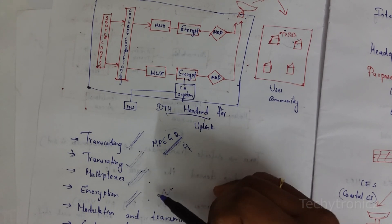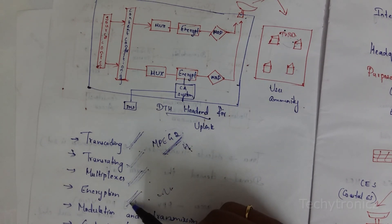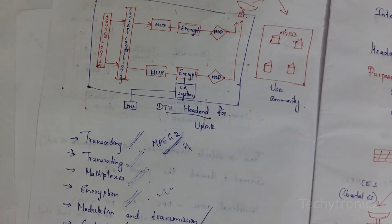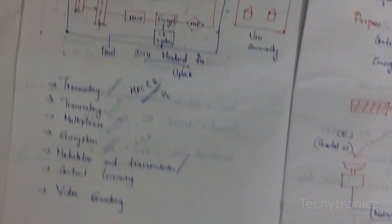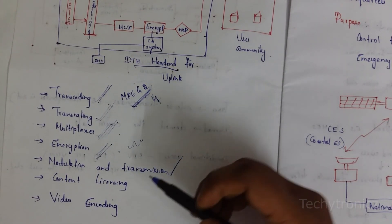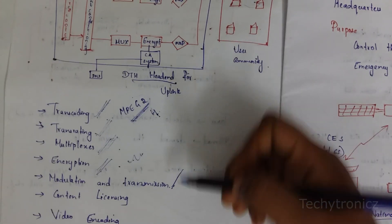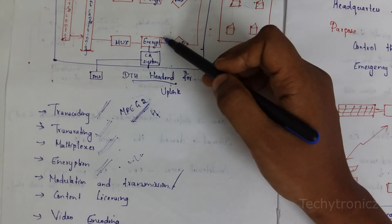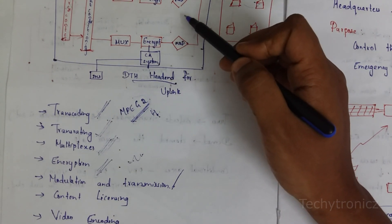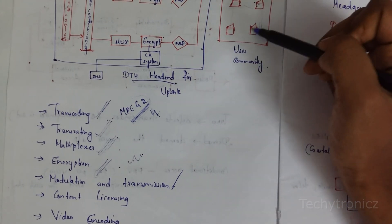Modulation and transmission: the content is then modulated and transmitted from the DTH headend to the satellite for broadcasting to customers.